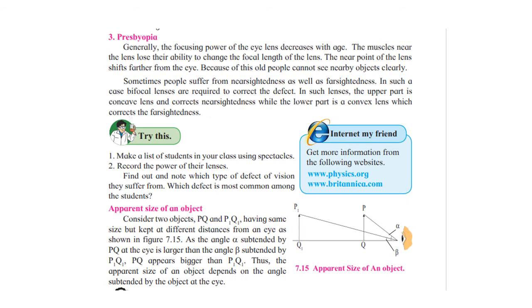Sometimes people suffer from both nearsightedness and farsightedness — they cannot see far-off objects clearly and also cannot see nearby objects clearly. In such cases they wear bifocal lenses, where the upper part is a concave lens correcting nearsightedness and the lower part is a convex lens correcting farsightedness. Nowadays progressive lenses are also used, which are similar but do not show the demarcation so clearly.